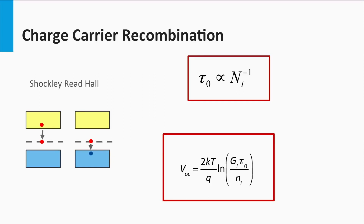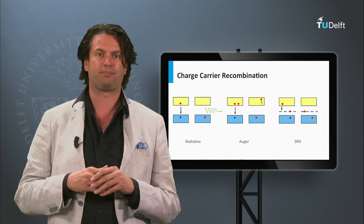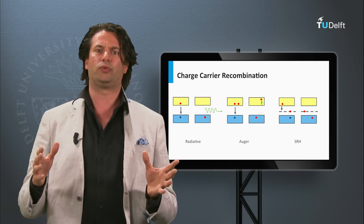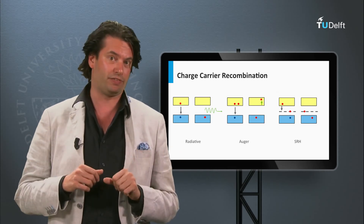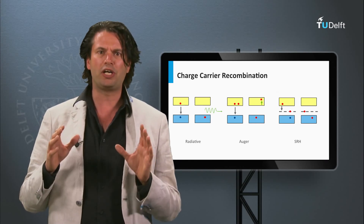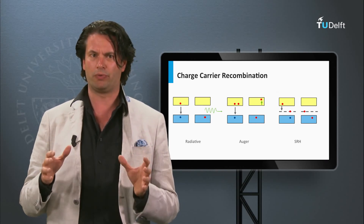Defects can be located in the bulk of the various semiconductor materials, but can also be present at the various interfaces between materials used in the solar cell, such as semiconductors, transparent conductive oxides, and metal contacts. Let's consider solar cells without bulk and interface defects — then the other two recombination mechanisms start to play a role.